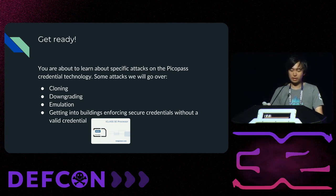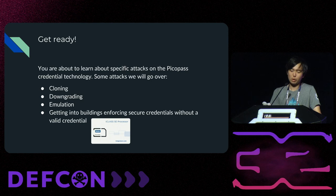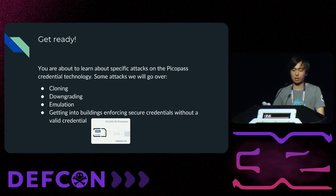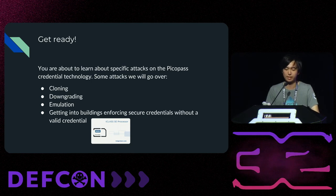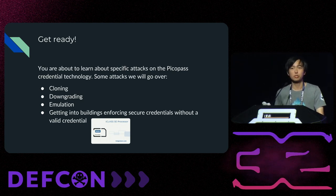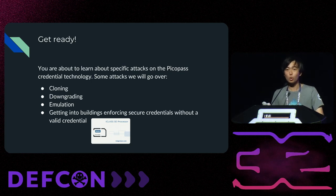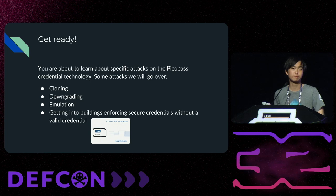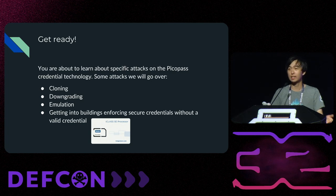The most simple attack we're going to go over is cloning, which is the least complicated attack. Most iClass legacy credentials use the standard authentication key, which has been obtained in the Heart of Darkness paper in 2010. If you haven't read this legendary paper yet, you should — it's totally worth a read. If systems are not using the standard key, those keys can be extracted using an attack called Low Class. Overall, these credentials are fairly trivial to copy; it's been done for over a decade.